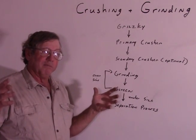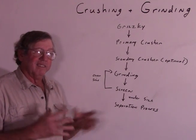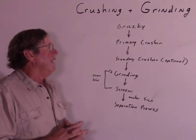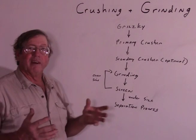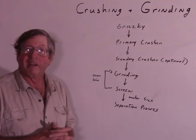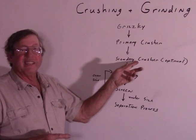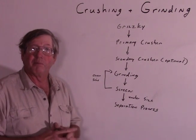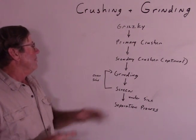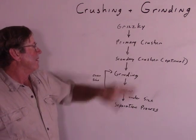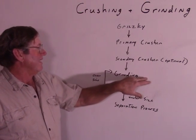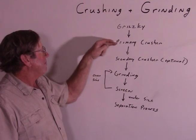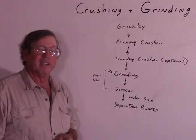In a micro scale operation the primary crusher will generally be fairly small with fairly small output. In a larger operation, the output of the primary crusher may be six inches minus, and therefore you may have a secondary or even tertiary or quaternary crushers depending on input size and the circuit you're trying to create. Secondary crushing takes the output of the primary crusher and reduces it to the size that's good to feed into your grinding circuit. On a micro scale, quite often the primary crusher goes direct to the grinding circuit.